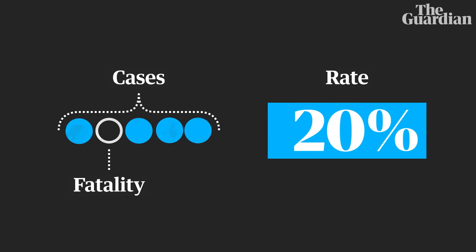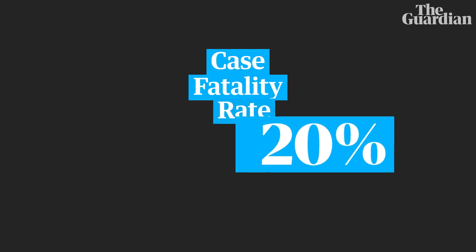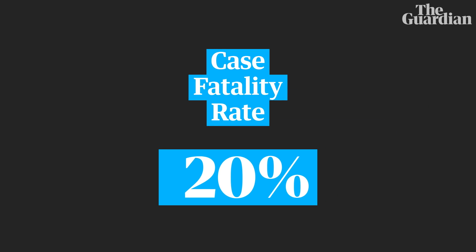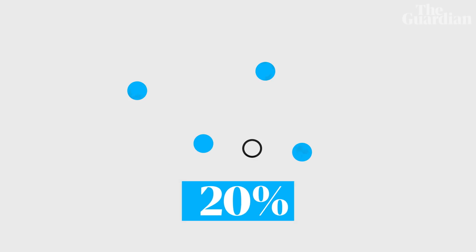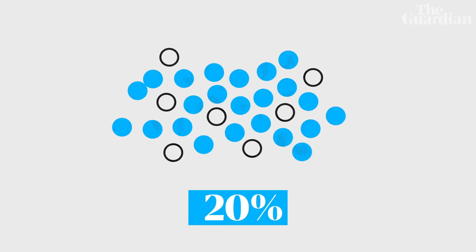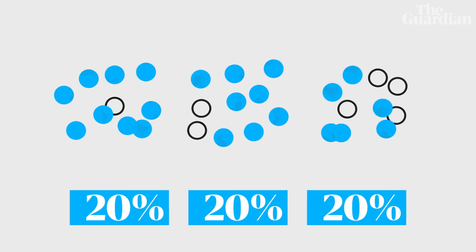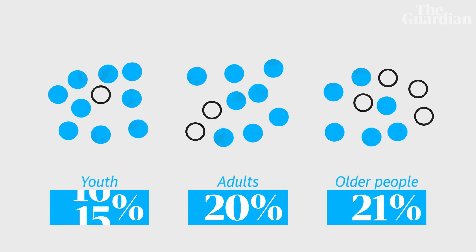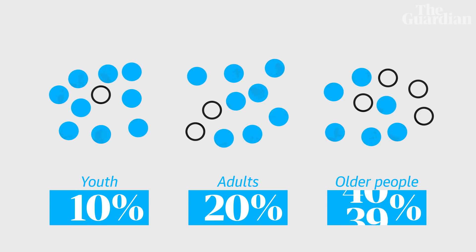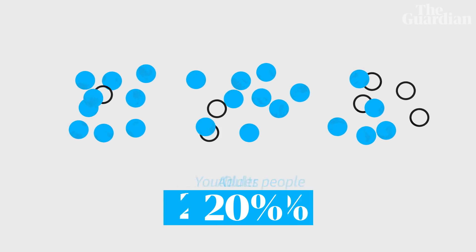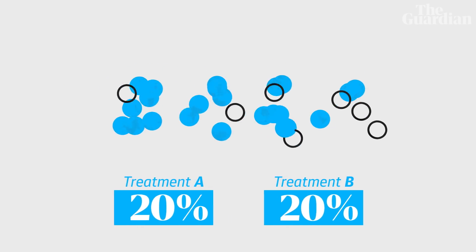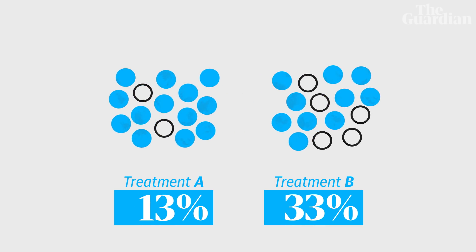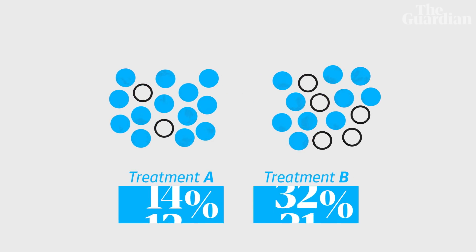This is a useful number — it's the case fatality rate. It's the number that you've probably been hearing the most. This number helps to guide our response. We can separate big populations into smaller groups and discover which are most vulnerable, and we can also see how effective different treatments are.